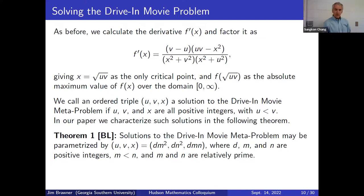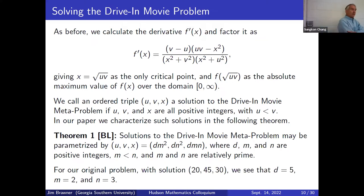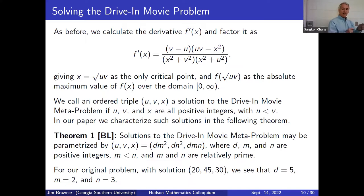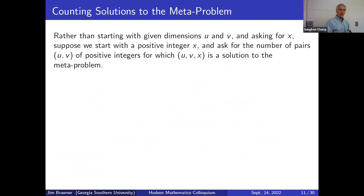In our original problem, u = 20, v = 45, x = 30. This corresponds to d = 5 (the GCD of 20, 45, and 30). Factoring out the 5, we get 4, 9, and 6 — and indeed 4 = 2², 9 = 3², and 6 = 2·3, so m = 2, n = 3.